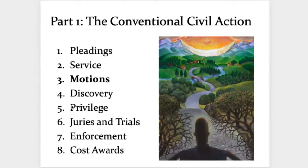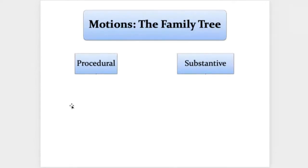Here is our motions family tree, which I'm going to go through bit by bit to give you a taxonomy of where all the different types of motions fit in. The first distinction you need to know is between procedural and substantive motions. A procedural motion is simply about how the litigation should proceed — what should happen next. There's a lot of flexibility in how things can happen within a conventional civil action, and procedural motions are about how something should happen in the context of litigation itself.